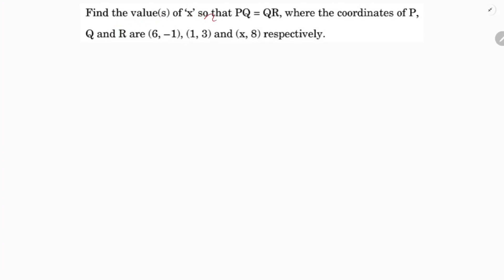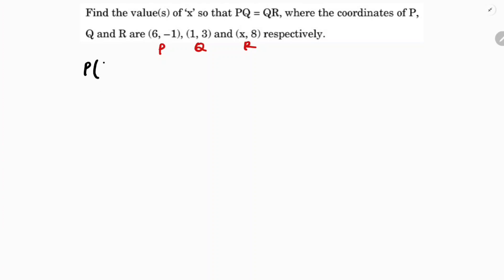Find the values of x so that PQ equals QR. The coordinates are given as: P is (6, -1), Q is (1, 3), and R is (x, 8). So PQ equals QR — this is an equidistant problem.